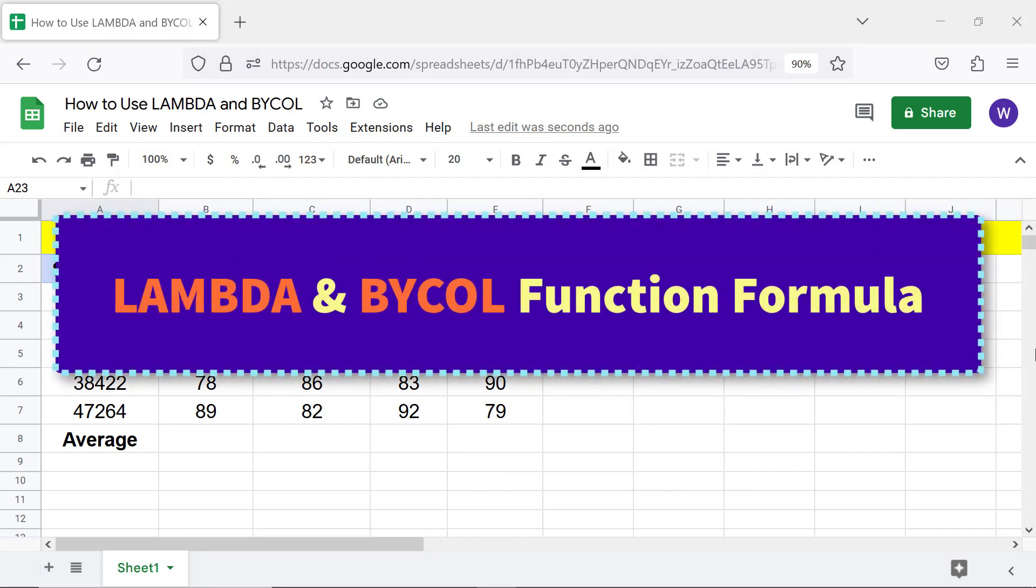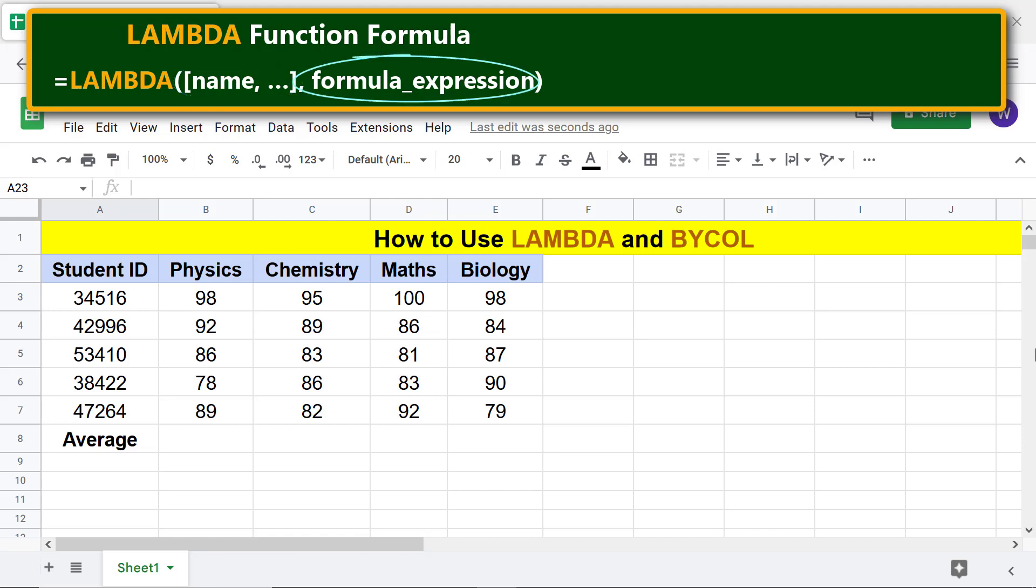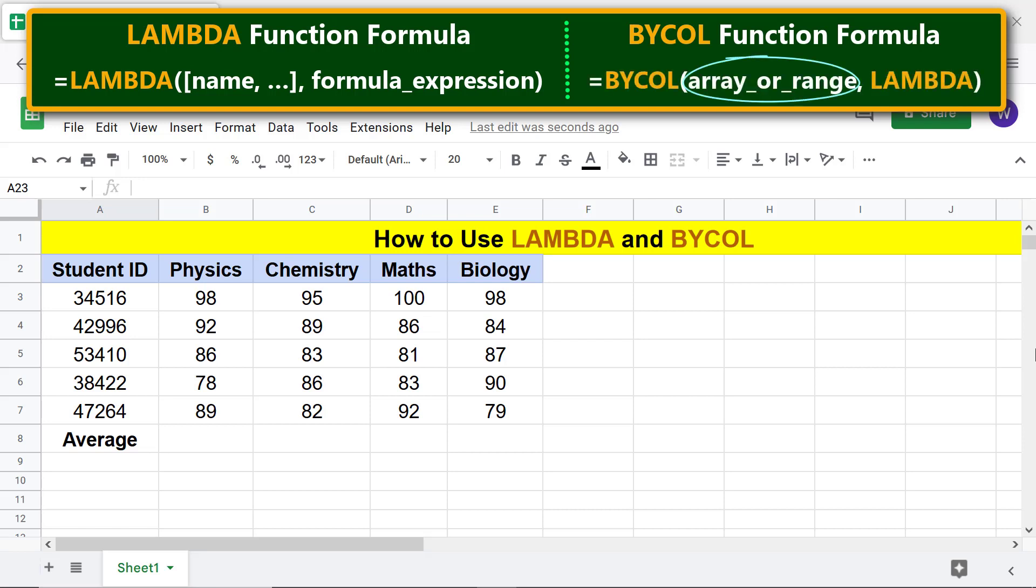LAMBDA and BYCOL function formula. The LAMBDA function formula is equals LAMBDA(name, ..., formula_expression). Name is an identifier which will be used in the formula expression. Formula expression is the formula which uses the names. BYCOL function formula is equals BYCOL(array_or_range, LAMBDA). Array or range is the data. LAMBDA is the function which has the formula that returns a single value for each column.